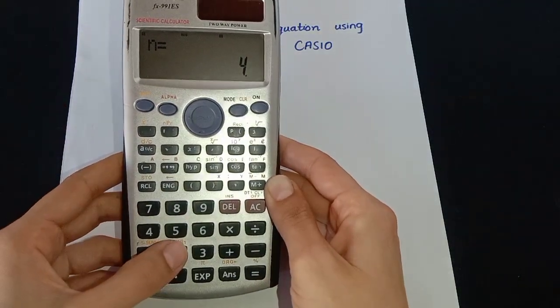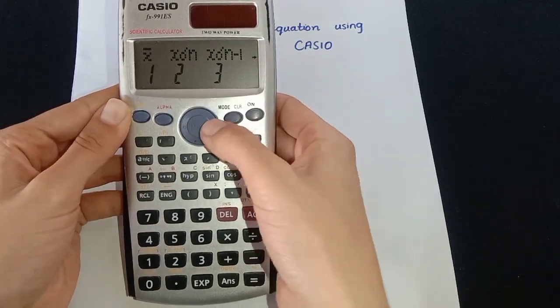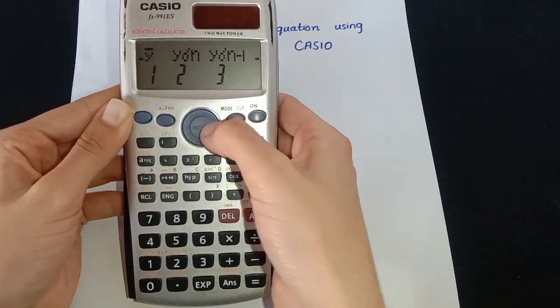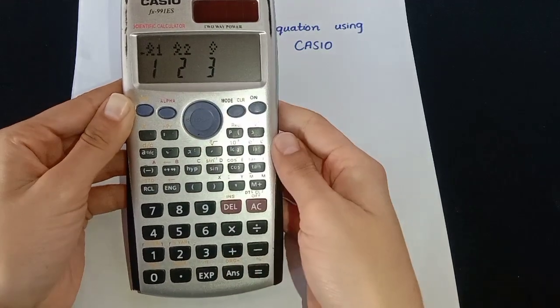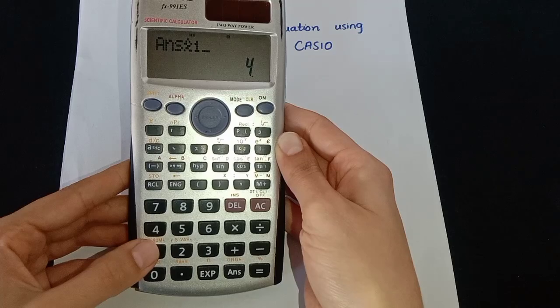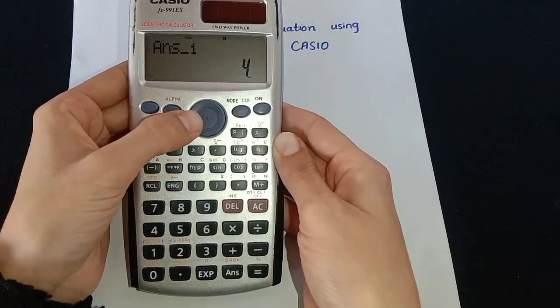And then press 2, and we have to select the x1 function. Press right arrow key, and there we go - x1 and x2. For x1, press 1, and then move this blinking cursor to the start by pressing